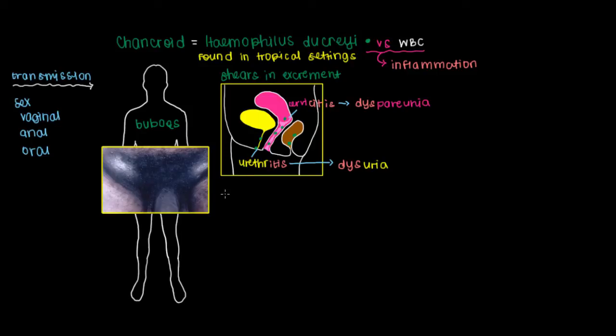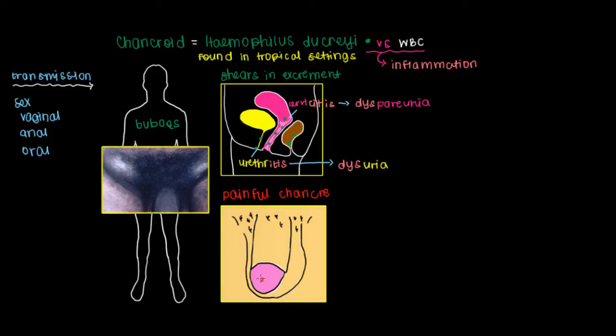The last symptom I'll mention for chancroid that's actually the most characteristic is what's referred to as a painful chancre, which may be a term you've heard before. I'll draw it right here. You'll see that it's just this indurated lesion that happens on mucous membranes - it can happen on the tip of the penis or even on the walls of the vagina, or most commonly in women on the cervix. I'm going to draw the walls here implying that they're raised. It's an indurated lesion, and what makes this most unique is that it's painful.